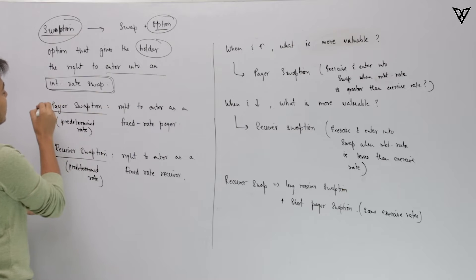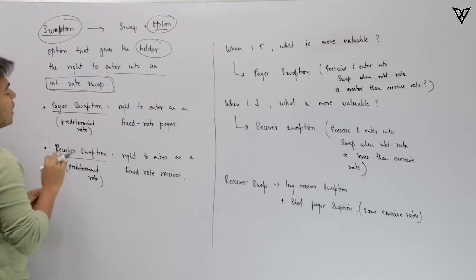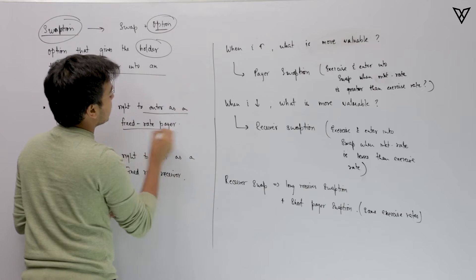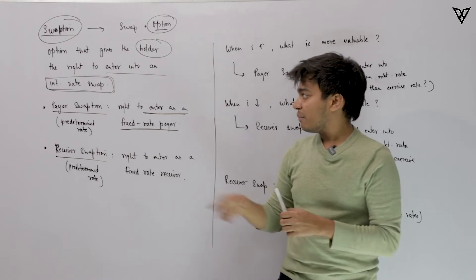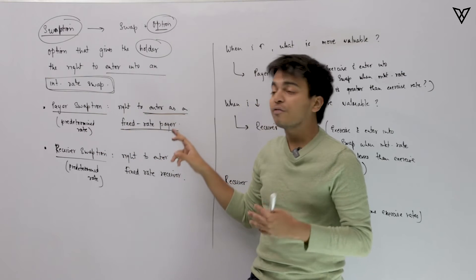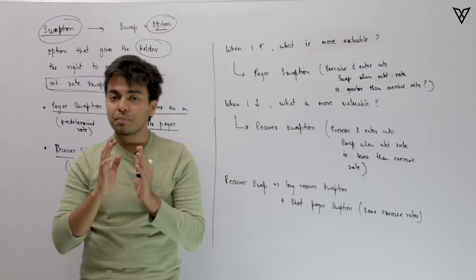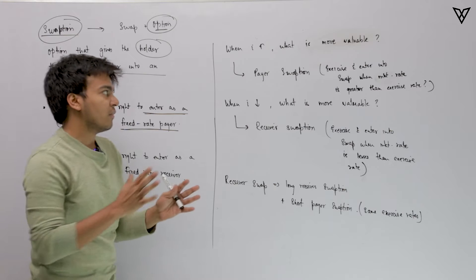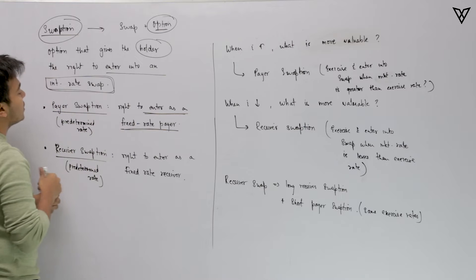There are two types of swaptions: payer swaption and receiver swaption. Payer swaption gives the holder the right to enter as a fixed rate payer. We will always be discussing from the perspective of the fixed rate person, never from the floating rate side. When we talk about payer swaption, we get to enter into a swap as a fixed rate payer.